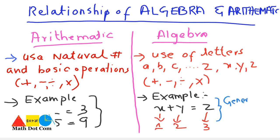This is the generalized form of arithmetic. This is how we can relate algebra to arithmetic, and this is the basic concept of algebra that we can derive from arithmetic. Hopefully, this has cleared your concept regarding how you can differentiate algebra from other branches of mathematics.